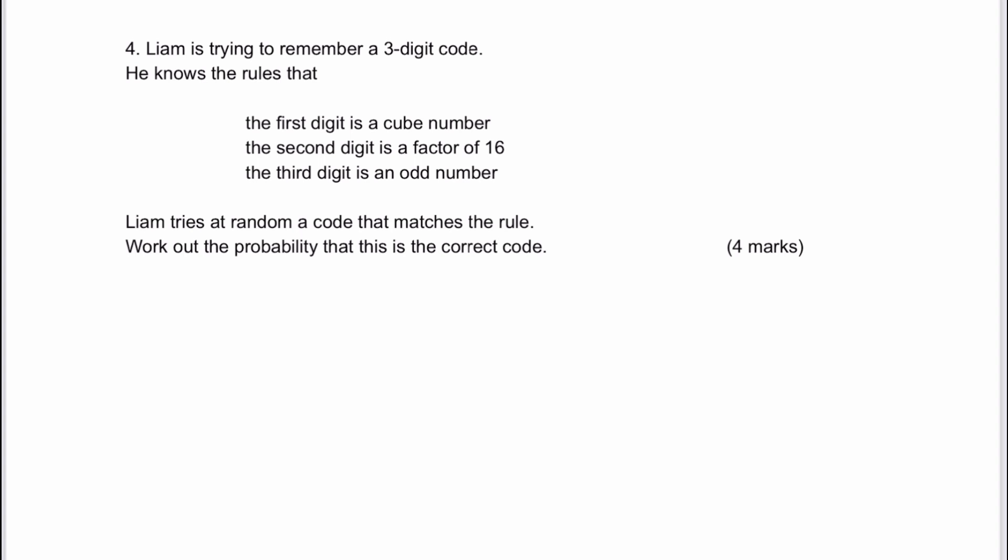In this one, we've got Liam is trying to remember a three-digit code. He knows the rules. The first digit is a cube number. Well, if it's a cube number, it's either going to be just one digit. It's going to be one times one times one, so therefore it's going to be one, or two times two times two, which is going to be eight. And there aren't any other single-digit cube numbers. So it's either going to be one or eight for the first digit.